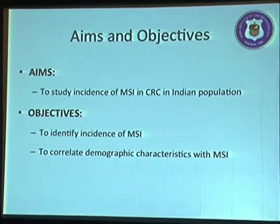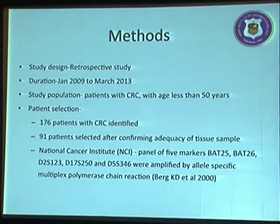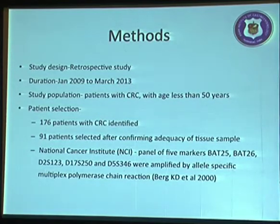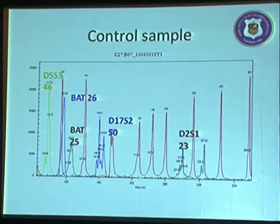The aims of the study were to determine the incidence of microsatellite instability in Indian population and to correlate demographic characteristics with microsatellite instability. This was a retrospective study conducted between June 2009 and March 2013, including colorectal cancer patients aged less than 50 years. Altogether 176 patients were identified, and 91 patients were selected after confirming adequacy of tissue samples. The NCI panel of 5 markers was studied using PCR technique.